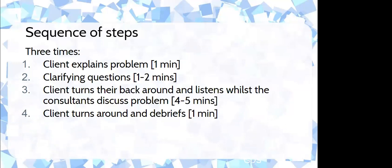The steps work like this: one person in the threesome — the client — takes about a minute to explain a problem or challenge they're facing. The others take one or two minutes to ask clarifying questions. Then the client turns their back and listens while the others discuss the problem for four or five minutes. In Zoom, instead of turning their back, the client turns off their video and mutes — present but listening without interrupting.